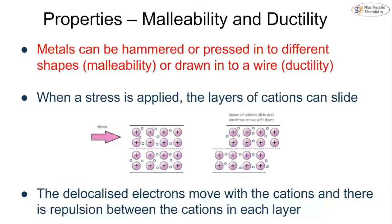Malleability is about shaping metals into different forms, and ductility specifically refers to drawing them into wires. The reason we can do this is that when a stress or force is applied, the cations exist in layers and these layers can start to slide. As the layers slide, the delocalized electrons move with the layers and we start to see some repulsion. Instead of delocalized electrons acting as a buffer between the cations, the cations come close together with no delocalized electrons between them, causing repulsion. This repulsion allows the cations to move further apart, reshaping the metal. It's all to do with layers sliding over one another and increasing repulsion between the cations.